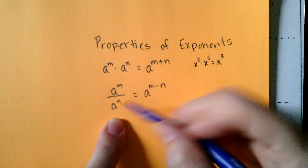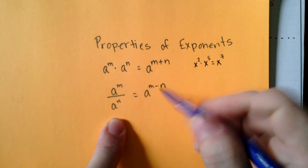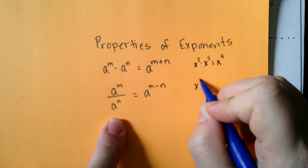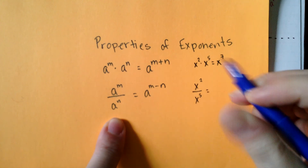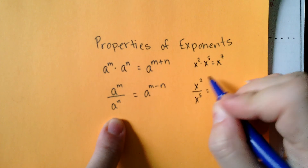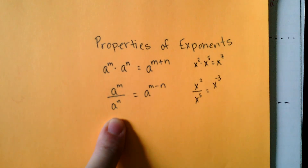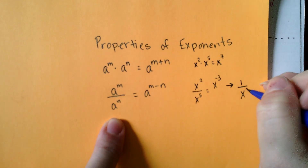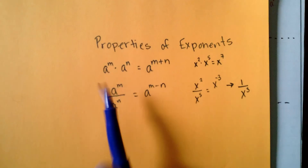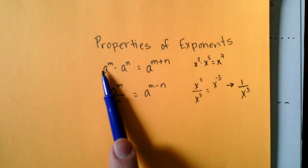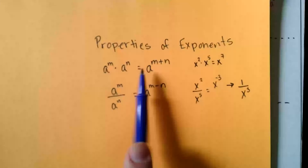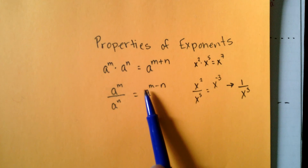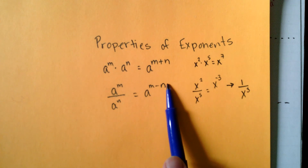If I was dividing, dividing two bases gives me one base with the power subtracted. So x squared divided by x to the fifth gives x to the negative third, which we'd write as 1 over x to the third. To summarize: with exponents, multiplying two bases gives a single base with exponents added; dividing two bases results in a single base with exponents subtracted.